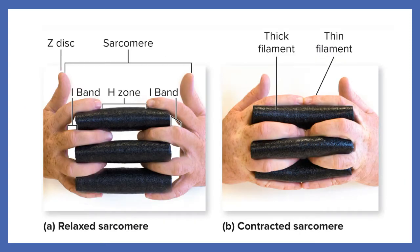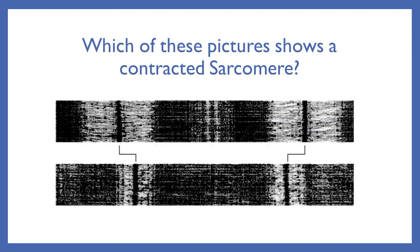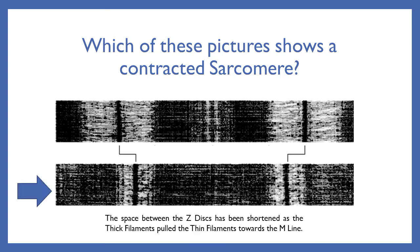Here's another example of a sarcomere: your hand would be the Z-disc, and your fingers would be the thin filaments. The black rubber is the thick filament in the middle. This is a relaxed state on the left and a contracted state on the right. Which of these pictures shows a contracted sarcomere? Since the Z-discs are pulled closer together and we see less of the white areas, the bottom picture is going to be the contracted state.